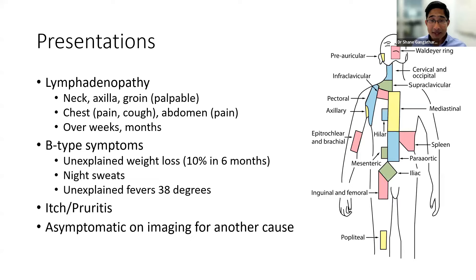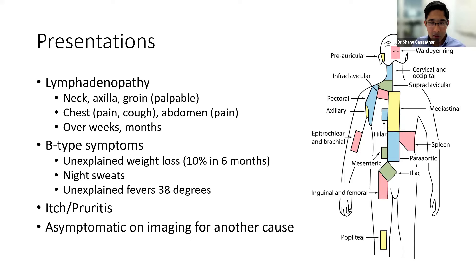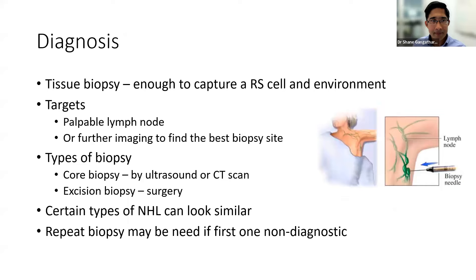I've seen all sorts of presentations with Hodgkin lymphoma. Sometimes patients get imaging scans done for some other reason and a lymph node mass is found. I've had a young man who fell off his skateboard, injured his chest, had a chest x-ray which found a large mediastinal mass. I've had another man with a ruptured aorta being imaged every year who had an enlarging mediastinal mass noticed. Many different presentations for this lymphoma.